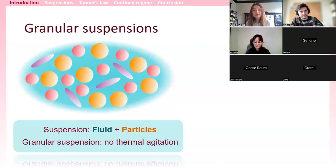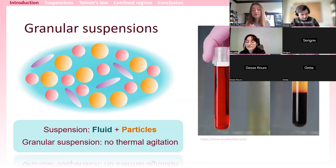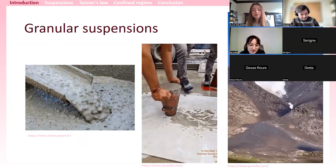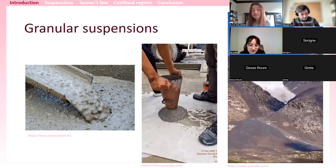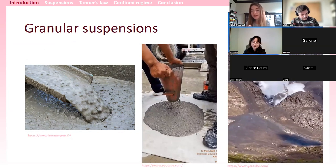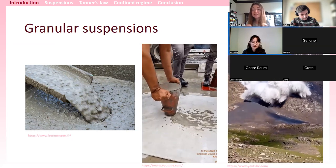A granular suspension is just a mixture of particles with a fluid, where the particles are large enough so that they don't have any thermal agitation — a simple criterion is that their size is larger than one micron. This kind of suspension is ubiquitous in everyday life: blood is a granular suspension of red blood cells in plasma; concrete is a mixture of sand and gravel with cement; and avalanches are mixtures of ice crystals in air.